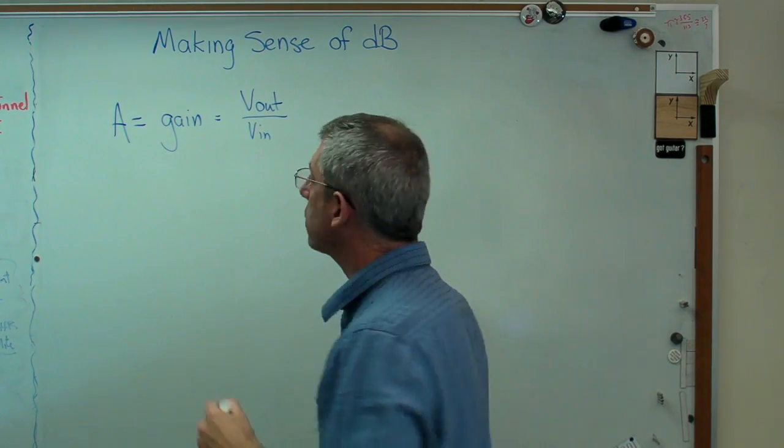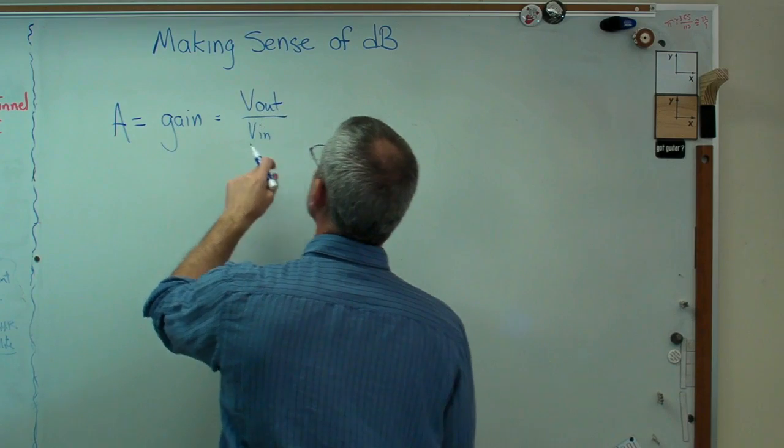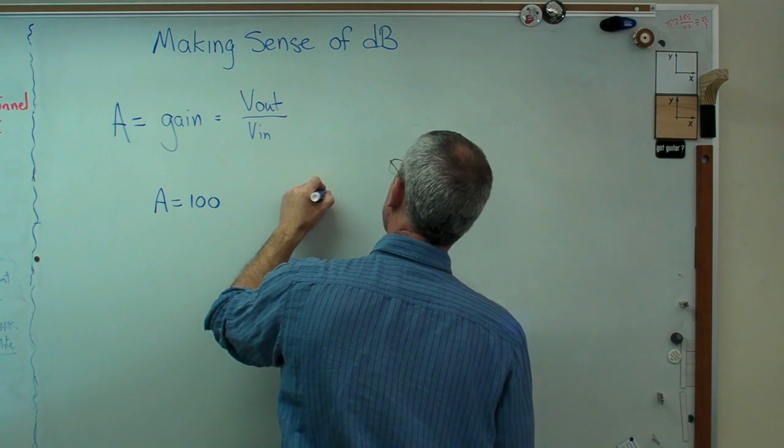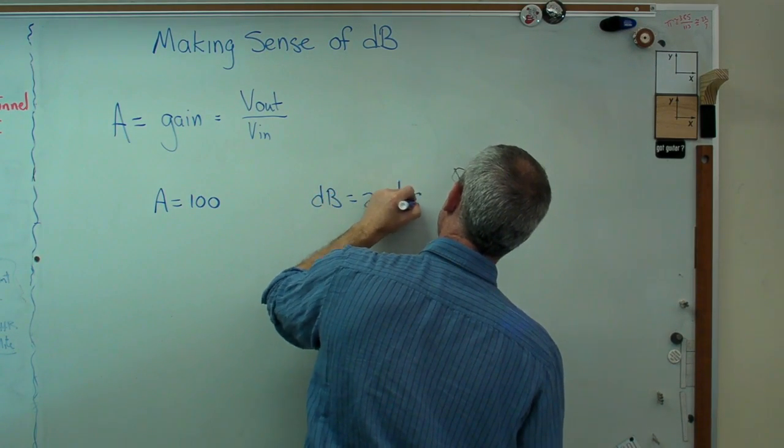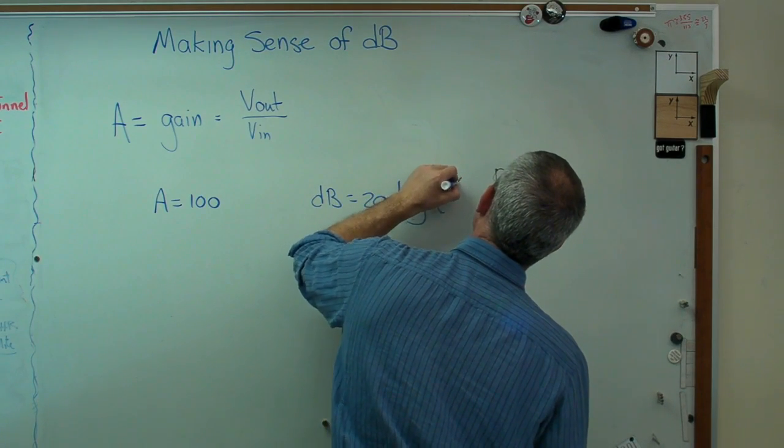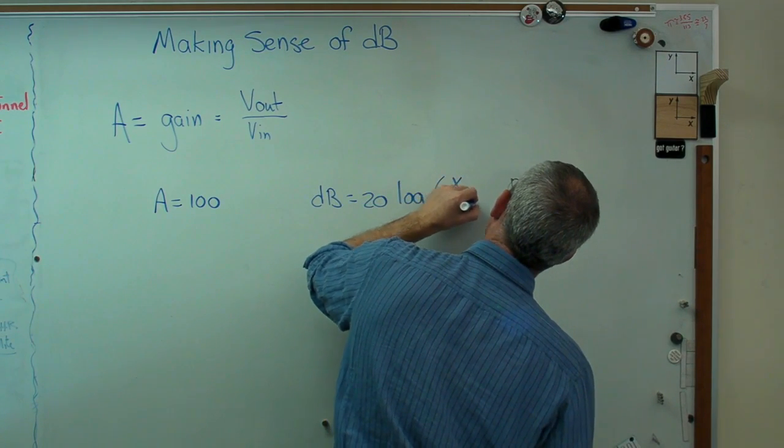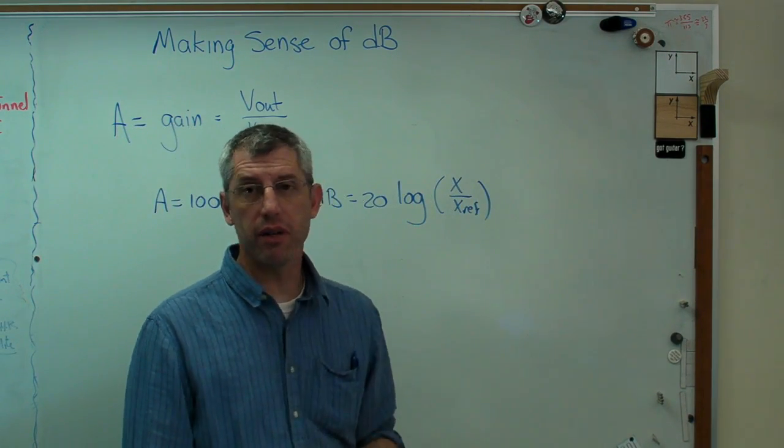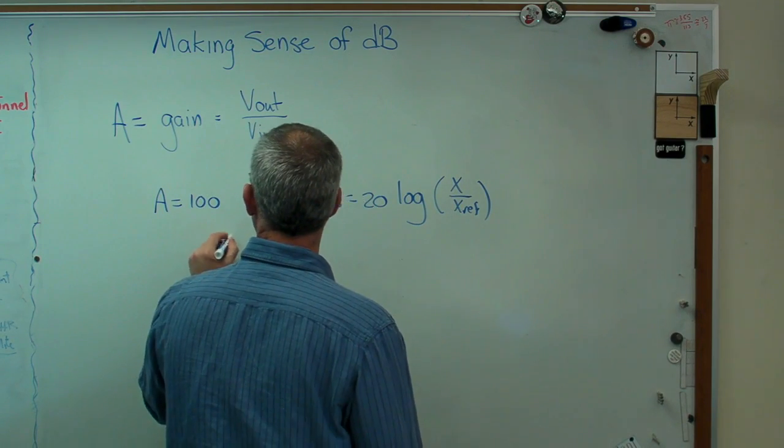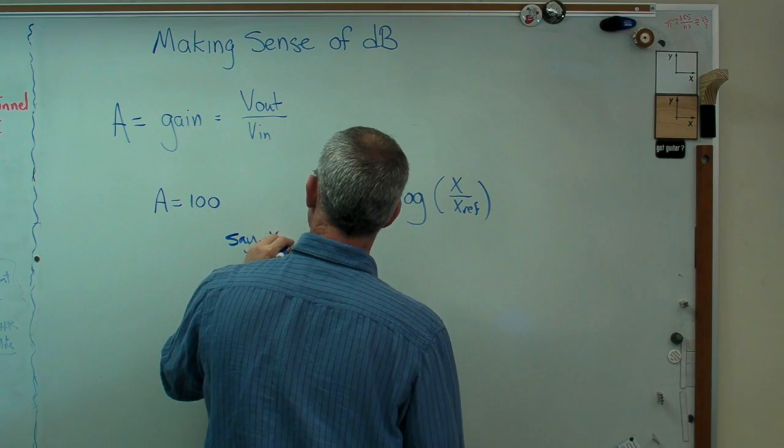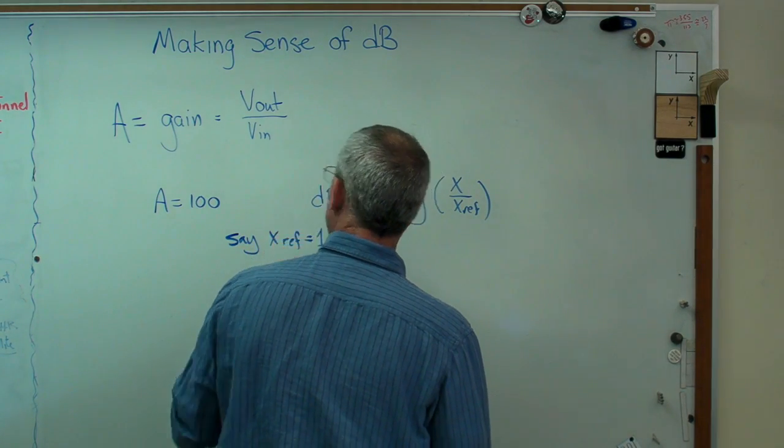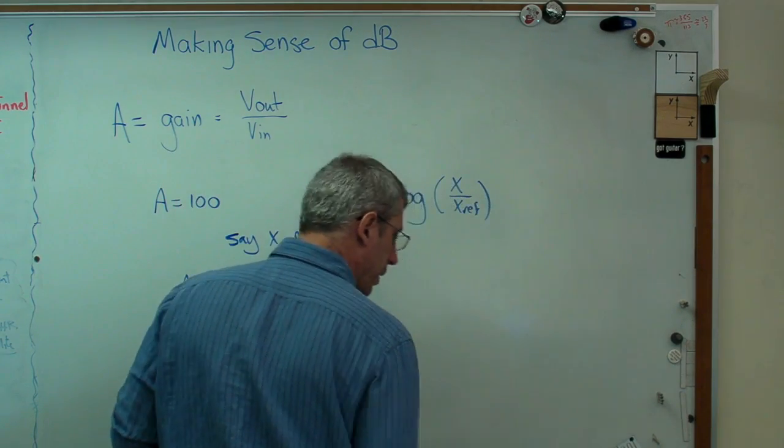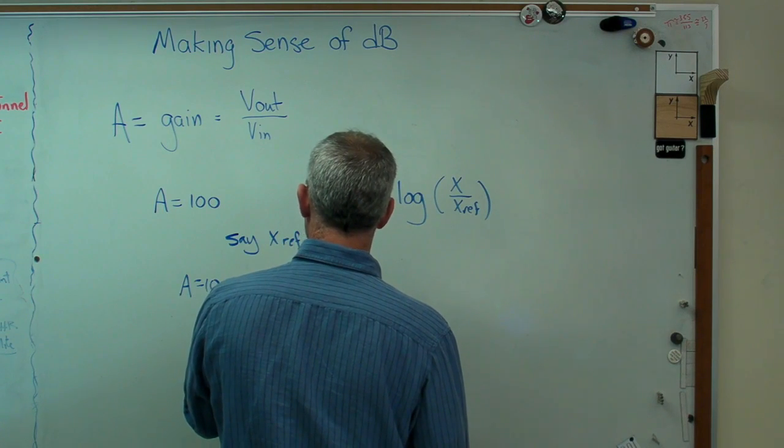What if the gain was 100? Well, if I want to express gain in decibels, I'm going to call that 20 log base 10, x over xref. Now, what do I use for xref? If nothing is specified, generally you'll see 1 used as xref. So let's say xref equals 1. Well, if A equals 100, then we should have a gain of 40 decibels.